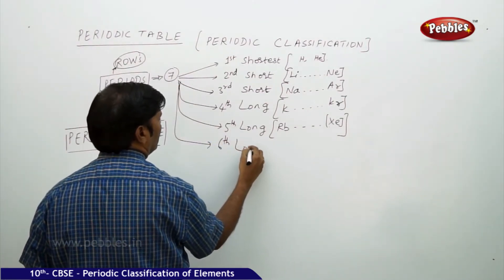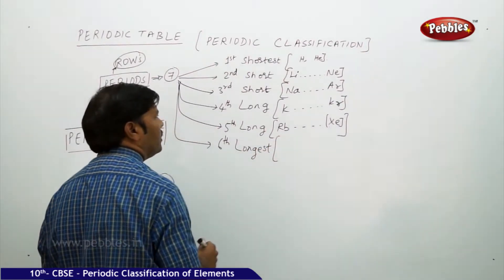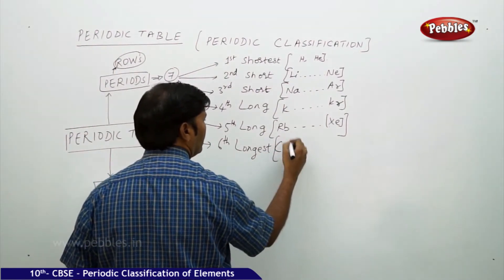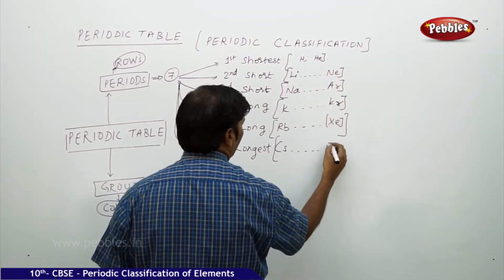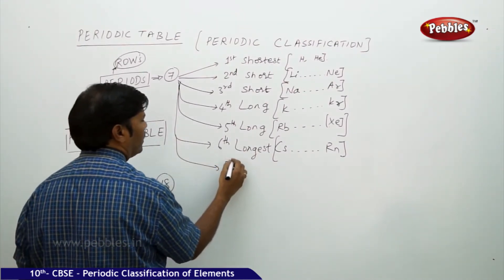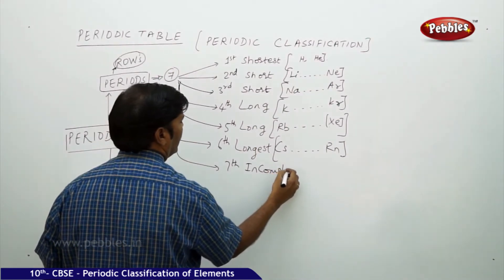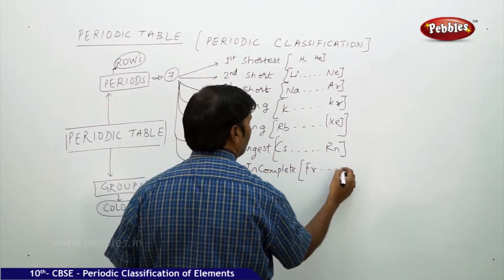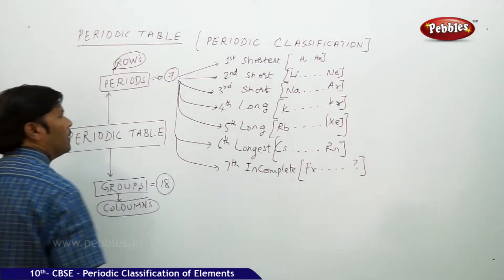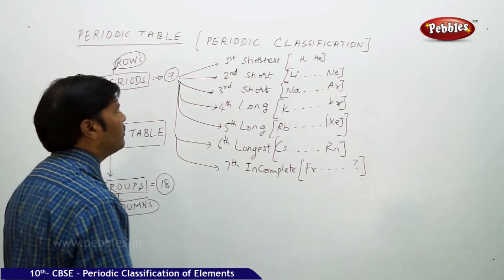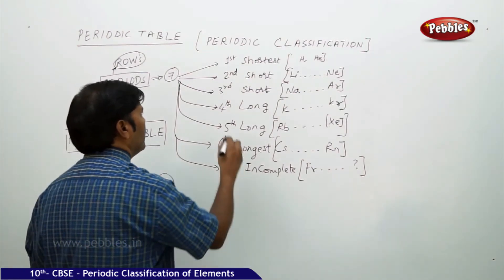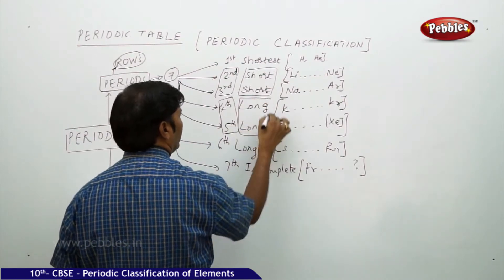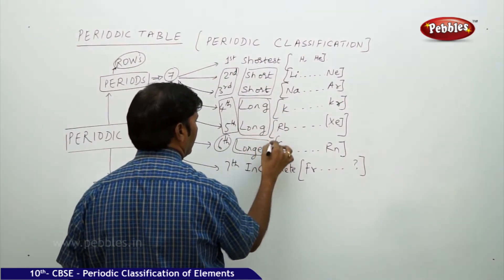The sixth period is the longest, starting with cesium and ending with radon. The seventh period is incomplete, starting with francium. To summarize: the first period is shortest; second and third are short periods; fourth and fifth are long periods; sixth is the longest period; and seventh is the incomplete period.